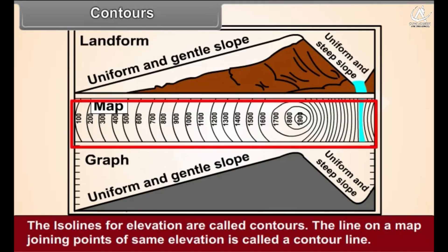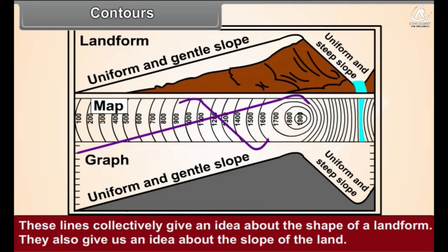Contours: The isolines for elevation are called contours. The line on a map joining points of same elevation is called a contour line. These lines collectively give an idea about the shape of a landform. They also give us an idea about the slope of the land.